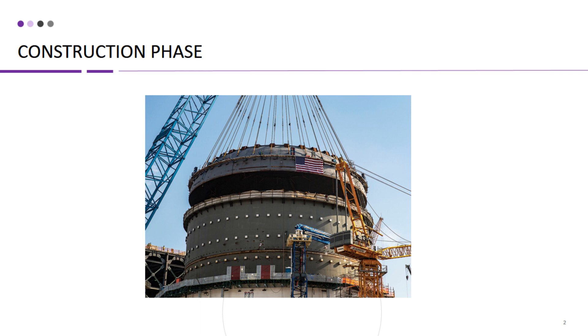It also involves the installation of safety features such as containment structures, emergency shutdown systems, and radiation protection measures to ensure the safe operation of the plant. Safety is a top priority in every phase of a nuclear power plant's life cycle. The construction phase can take several years or even decades, depending on the size and complexity of the plant.